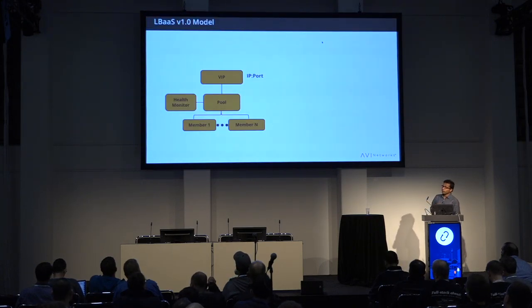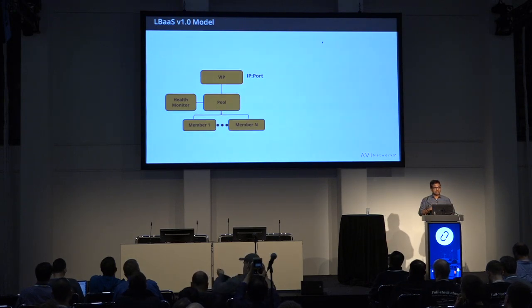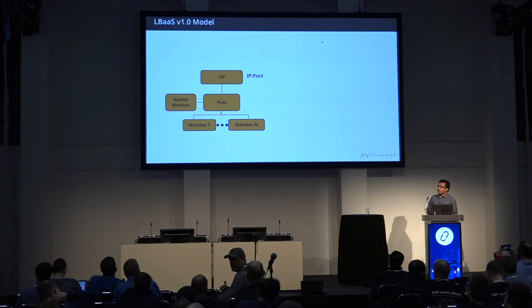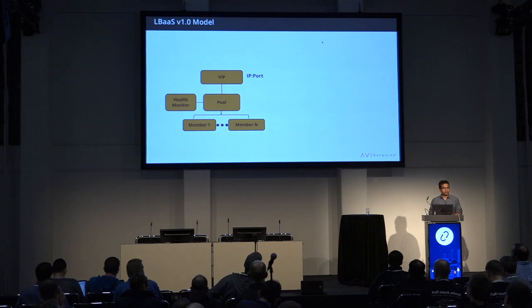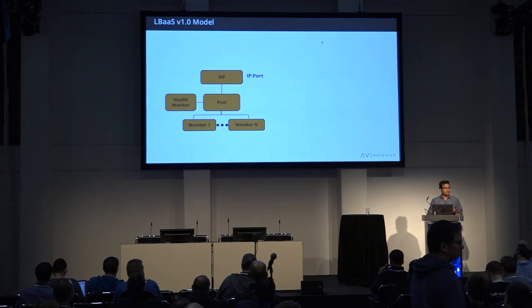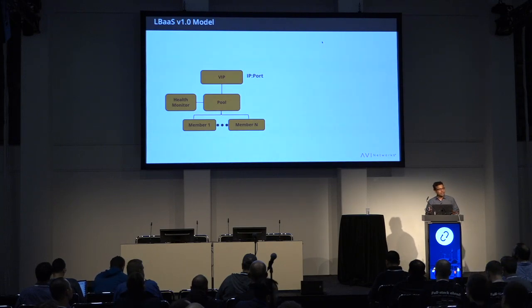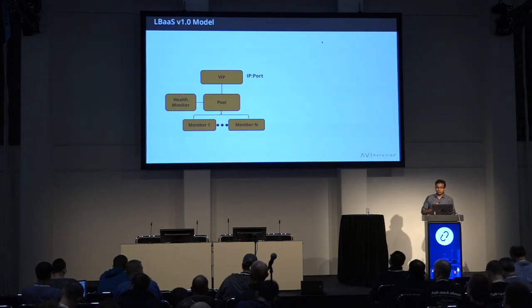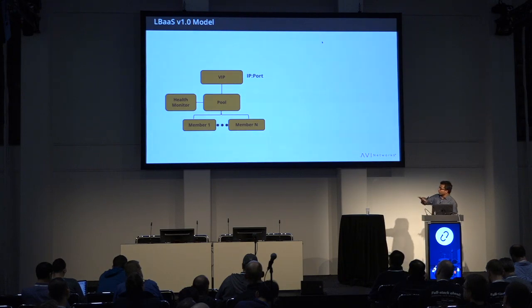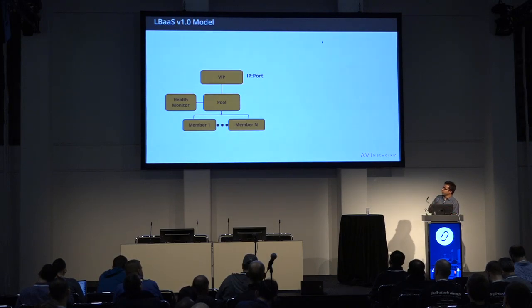I'll start with the LBaaS V1 model to set the stage, since this is the foundation that was expanded over time. Any load balancer has basically three or four components: there is a pool, which represents a set of servers; a health monitor associated with it to specify how you want to monitor your back-end pool members — whether HTTP-based, ping-based, HTTPS-based monitoring, or even MySQL-based monitoring; and the construct of the VIP, which is the front-end IP address and port at which the service is provided. That's what users connect to.